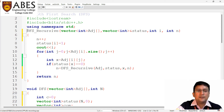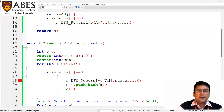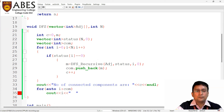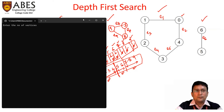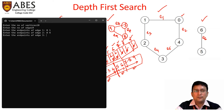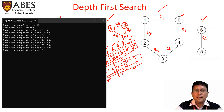The DFS recursive function is returning an integer value, so the return type has been updated to integer. There is a basic mistake — we must declare variable N, and a semicolon is required. Now we take input according to the graph on the right-hand side: it has 10 vertices and 9 edges. The edges are: 0-1, 0-4, 1-2, 2-3, 3-4, 5-6, 7-8, 7-9, and 8-9.